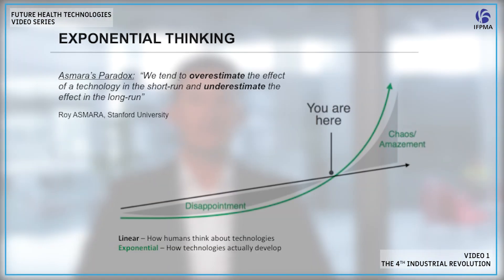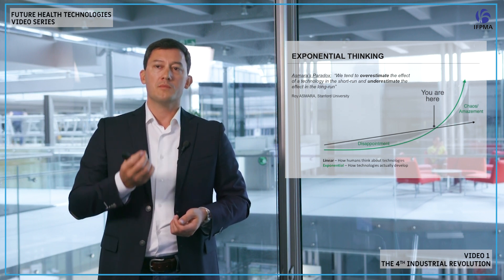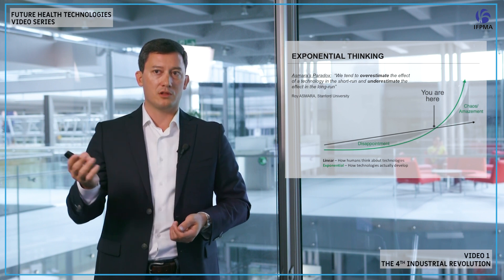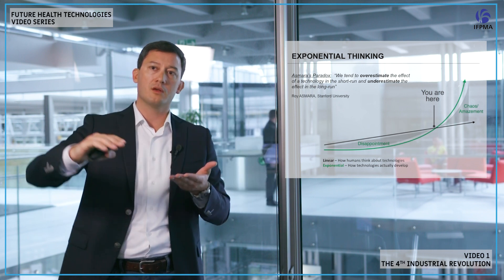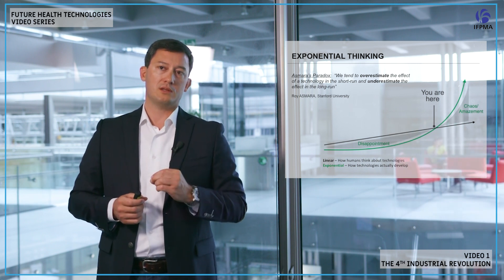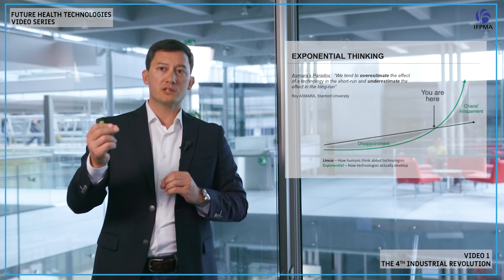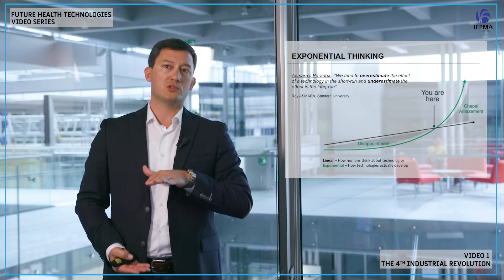A researcher called Amara, who used to teach and research at Stanford University, realized there is a fundamental misalignment between how we, as humans, perceive technology and how technology is actually behaving. We've learned that technology follows an exponential path — that's the green curve on the slide. But humans think linearly — that's the black curve. We keep thinking things have been the way they've been, following a simple linear path. What this creates is what Amara called the Amara paradox: we have a natural tendency to overestimate technology over the short term, but underestimate technology capacity over the long run. So currently, we think technology can do more than it really can — that's the disappointment phase.